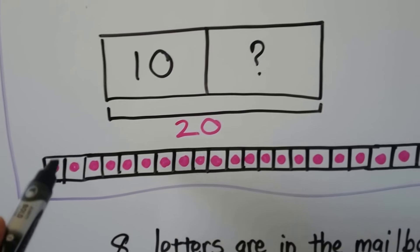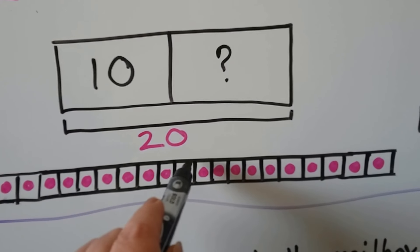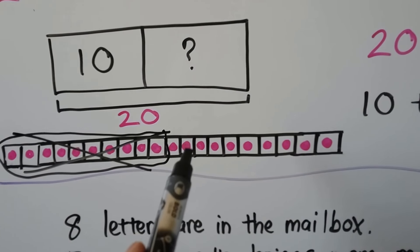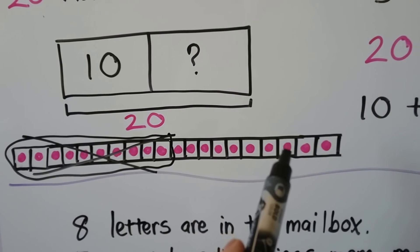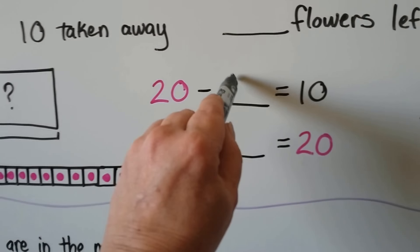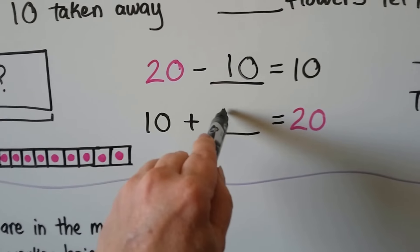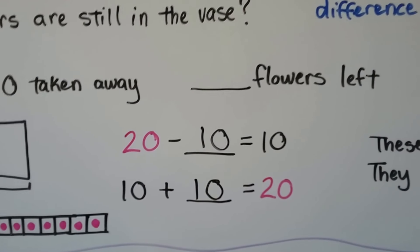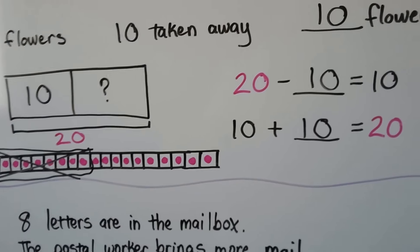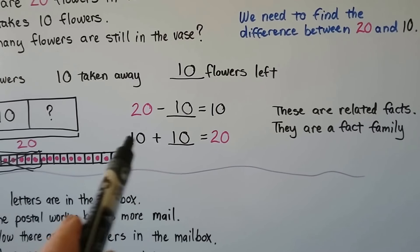We can use counters as a bar — there were 20 and he took 10, so we cross out 10. That leaves 10. So 20 minus 10 is going to leave 10 flowers in the vase. That also means 10 plus 10 is equal to 20. These are related facts and a fact family. These are doubles, aren't they? 10 plus 10 — it's the same addend.